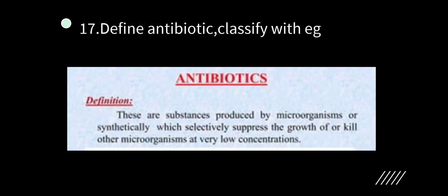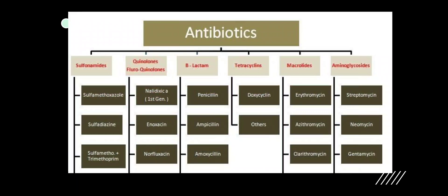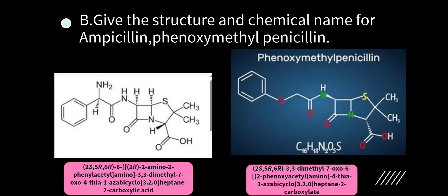Define antibiotics. Antibiotics are substances produced by microorganisms or synthetically which selectively suppress the growth or kill of microorganisms at very low concentration. Classification: sulfonamides, quinolones, beta-lactams, tetracyclines, macrolides, aminoglycosides. Give one or two examples for each. Chemical name and structure of ampicillin and phenoxymethylpenicillin are shown — practice these structures.